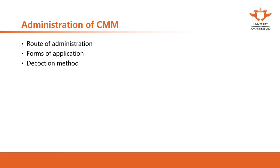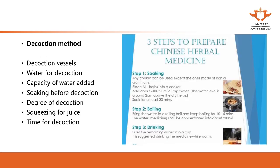Regarding how to administrate herbal medicine — it depends on the different dosage forms. Here we only introduce one of the most common forms: the decoction. Apart from the decoction, in Chinese herbal medicine we also have other forms such as tablets, oils, and some other external or internal administration.